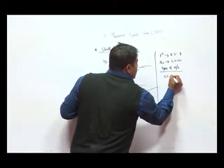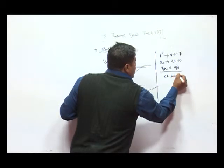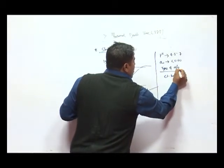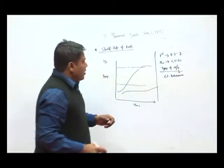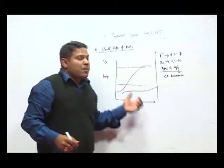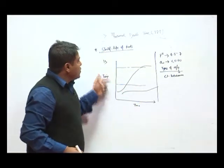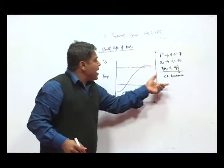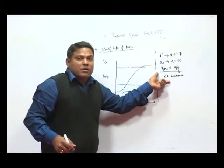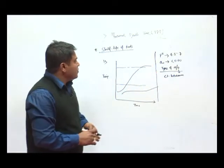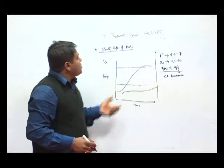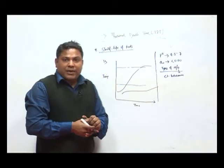So, we will take Cl botulinum as a reference microorganism. Again, the thermal processing that we use should have a required F value corresponding to the C value, that is the cook value. That is all about the thermal processing of foods. Thank you.